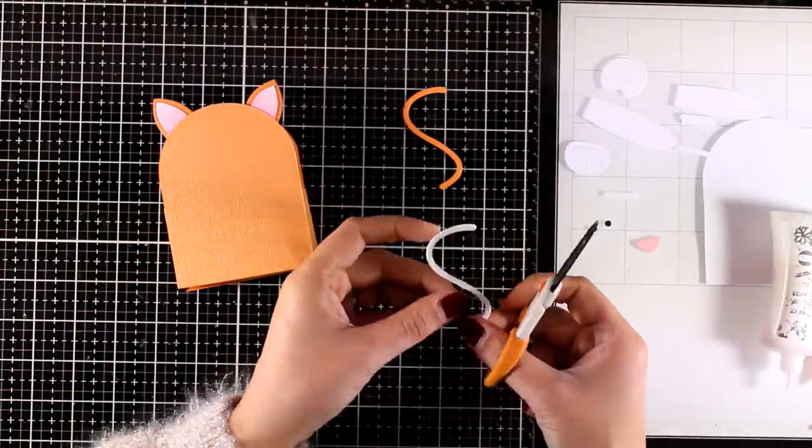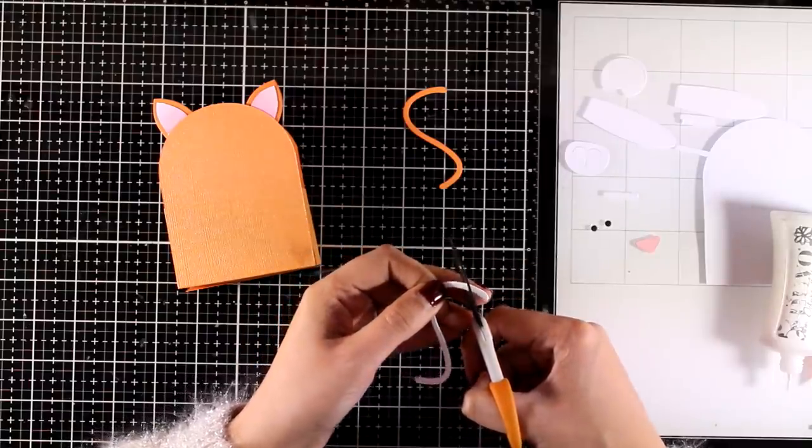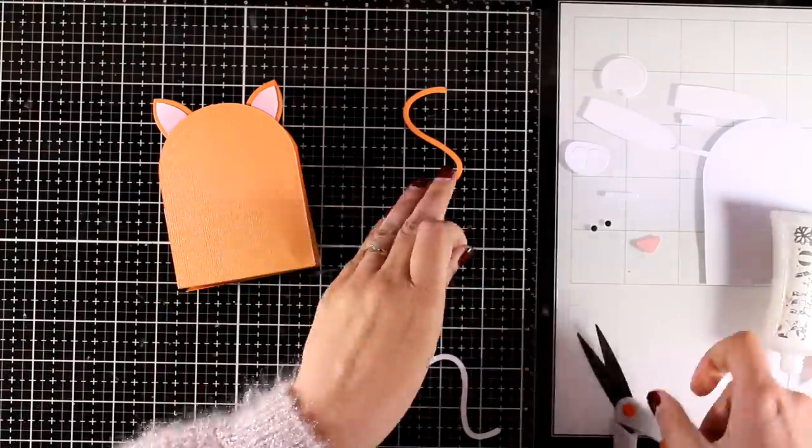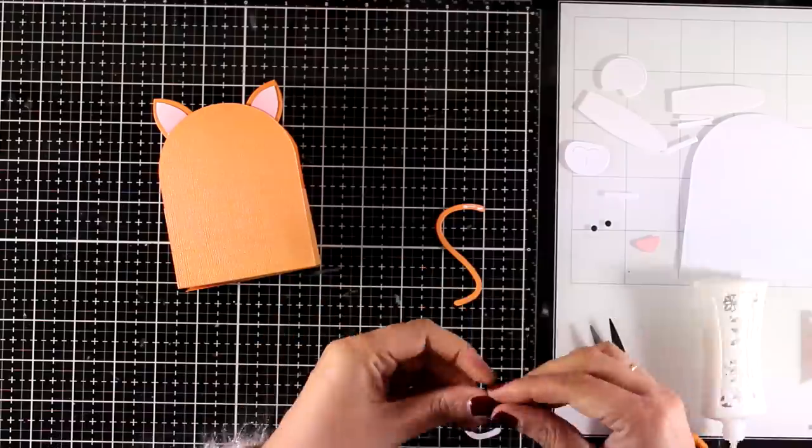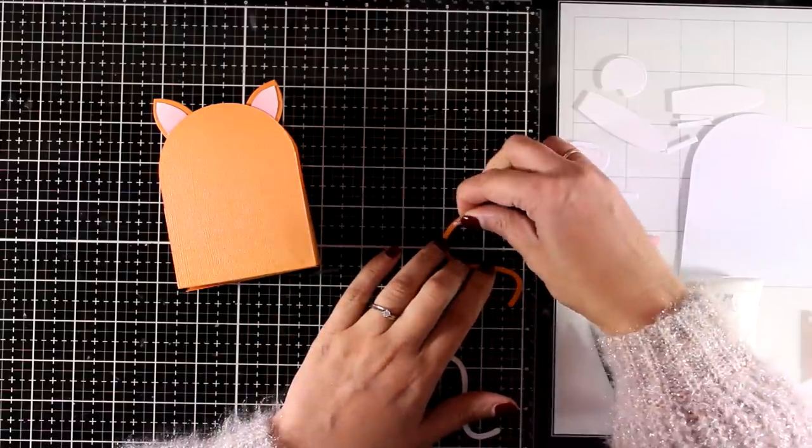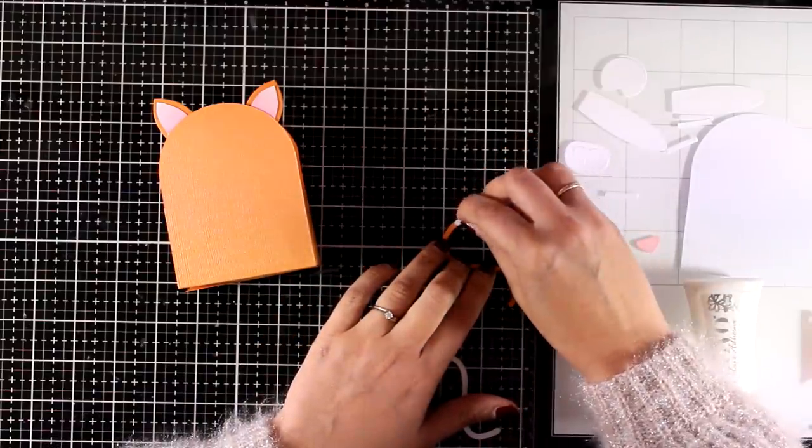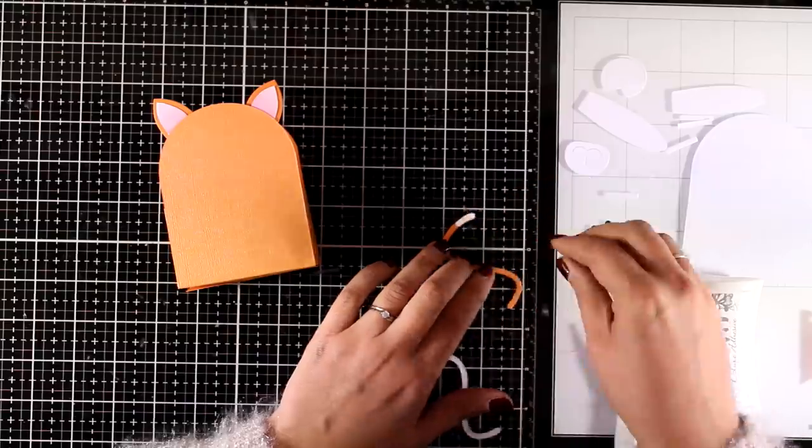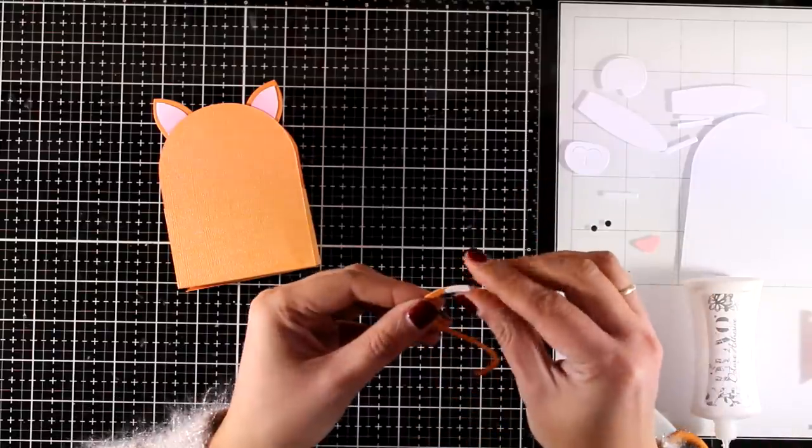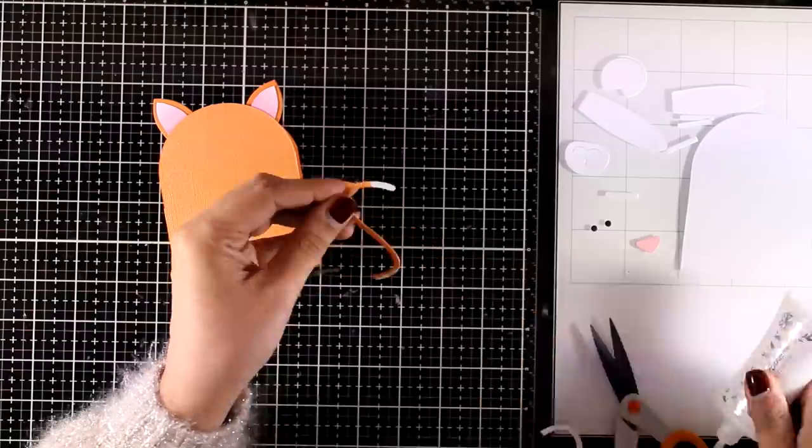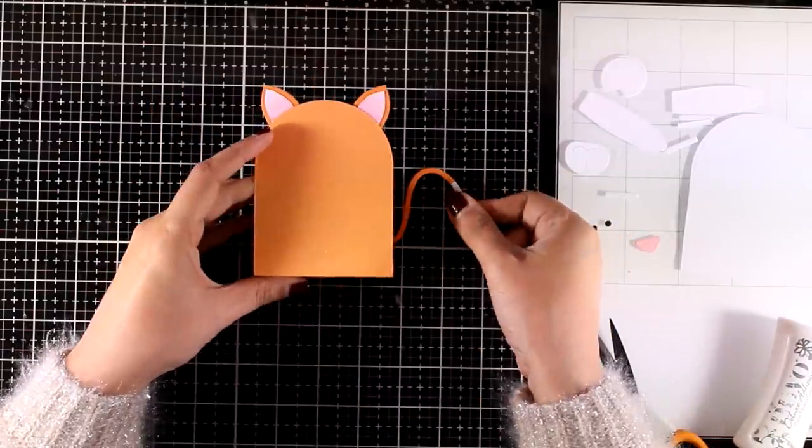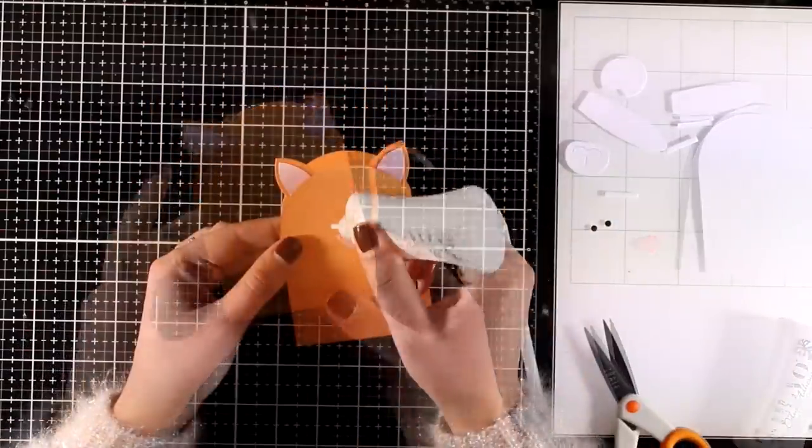Now for the tail, again I've cut it out twice - one from orange and one from white. I'm going to stick one piece on top of the other, just a little bit of paper piecing to make this cut look like my own since it has a little bit of white at the end of his tail. I'm going to stick that at the back of my box.